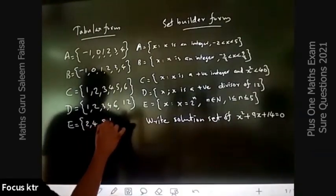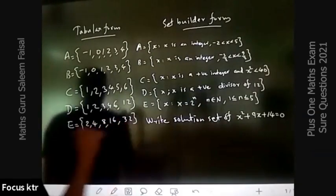2 raised to 4 is 16. 2 raised to 5 is 32. This is the answer. And last one.